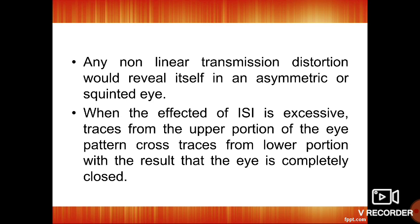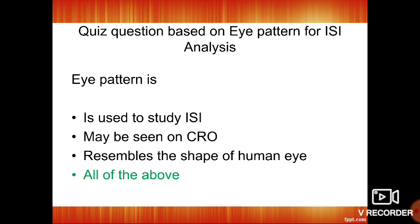Any non-linear transmission distortion would reveal itself in an asymmetric or squint eye. When the ISI is excessive, traces from the upper portion of the eye pattern show this. We can conclude here that the eye pattern analysis is used to study the effect of inter-symbol interference in baseband transmission.